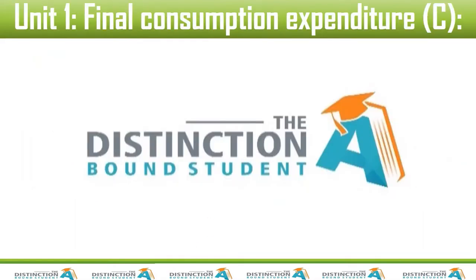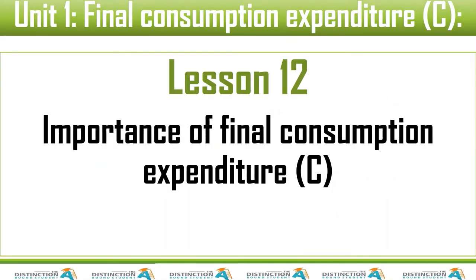Today's lesson, we're simply completing what we started in the previous lesson. We want to look at the importance of C. Remember, we have C plus G plus I plus X minus M — C being our final consumption expenditure by households, G being government spending. We want to look at why C is so important. You are going to notice that C is probably the most important amongst them all.